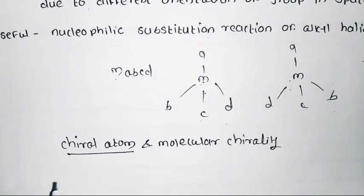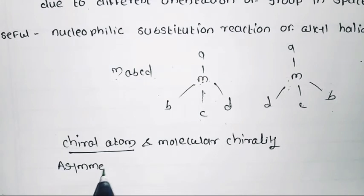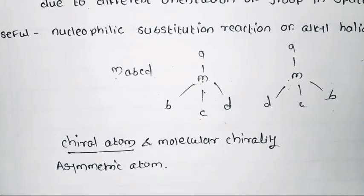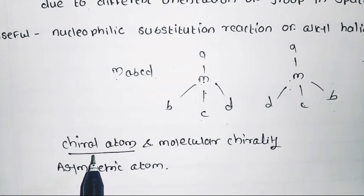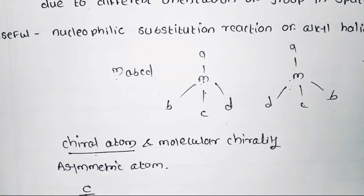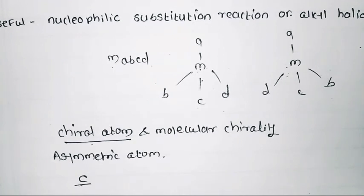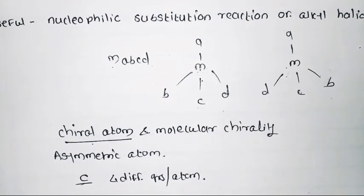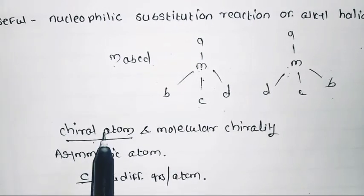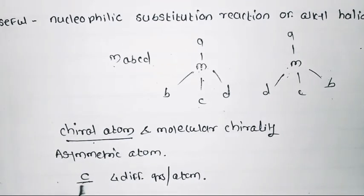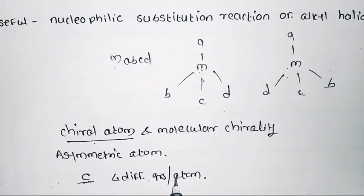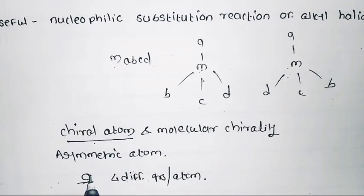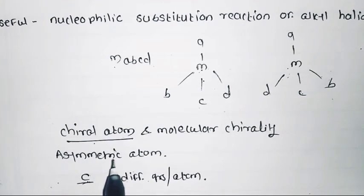A chiral atom is also called an asymmetric atom. A chiral atom is a carbon atom in a molecule that is attached to four different groups or atoms. This carbon is called a chiral carbon atom, also known as an asymmetrical carbon atom.